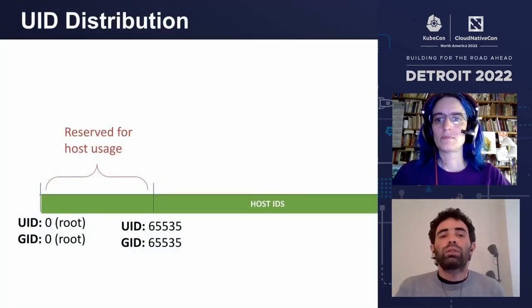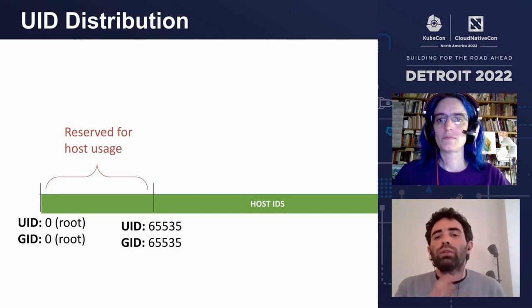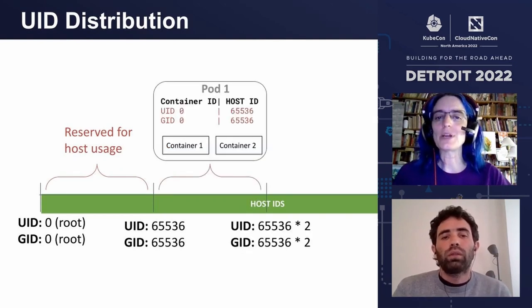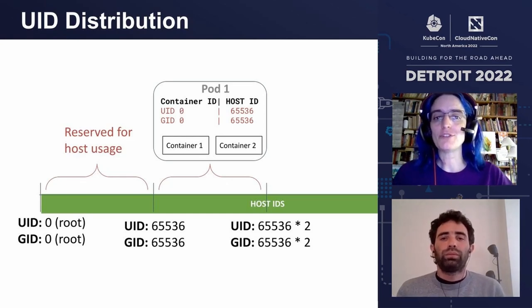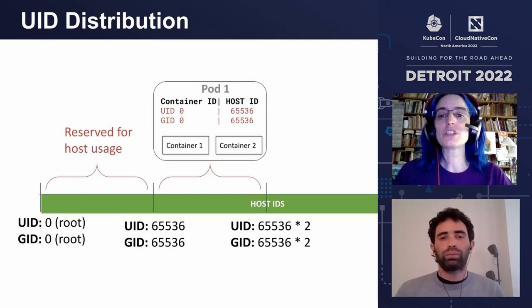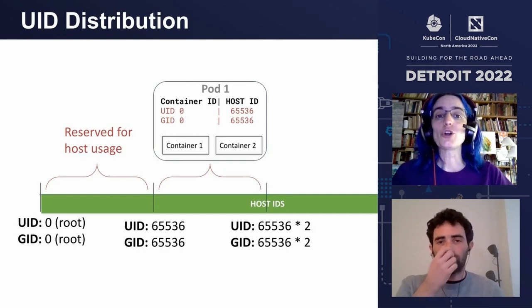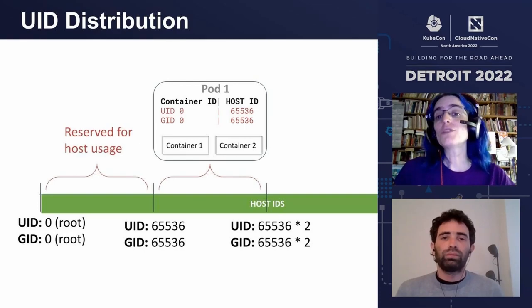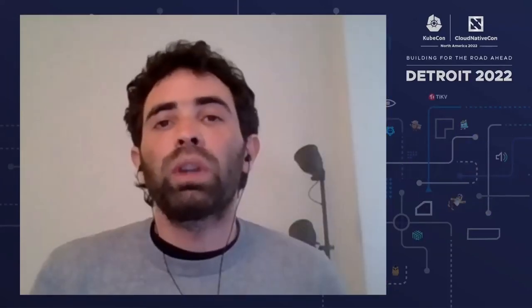The whole range of UIDs available is a 32-bit number. In the Kubernetes implementation, we reserve the first range of 16 bits to the host, from ID 0 to 65535. This means processes and files in the host should use this range for UIDs and GIDs. The 16-bit range of UIDs after that can be assigned to the first pod in the node using user namespaces. We map UID 0 and GID 0 inside the pod to UID 65536 in the host, so root in the container is an unprivileged user in the host. Inside a pod, the range of valid IDs goes from 0 to 65535. All settings in the pod spec that refer to a user or group ID — like run-as-user, run-as-group, fs-group, and so on — refer to the ID inside the container. So the whole space of user IDs is split into 65,000 chunks of 65,000 UIDs each.